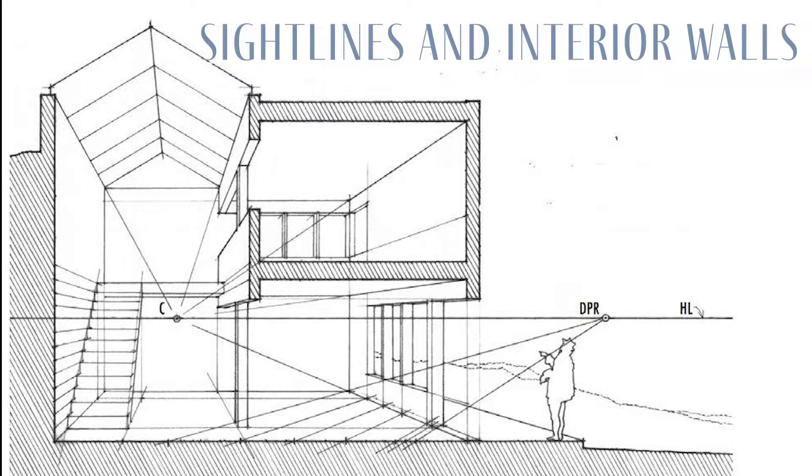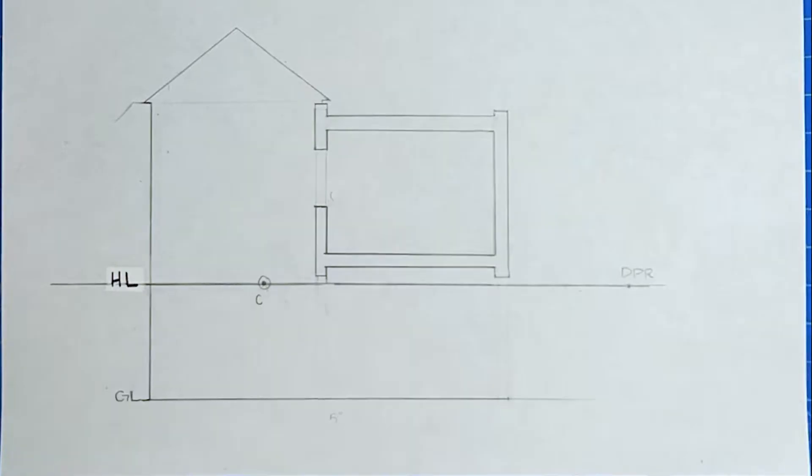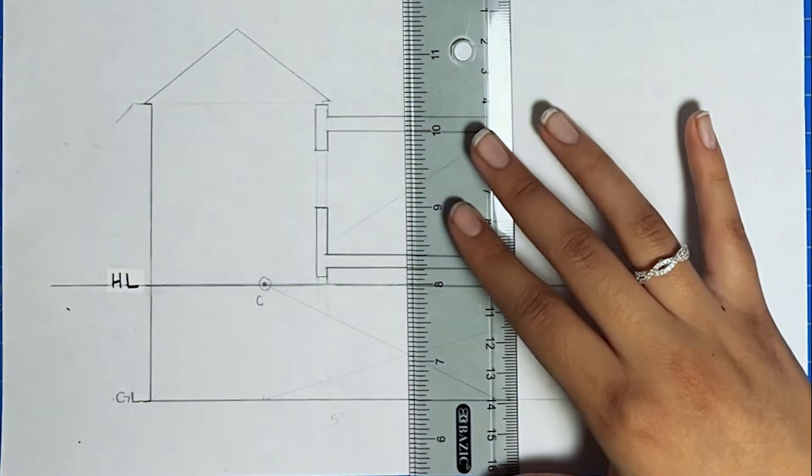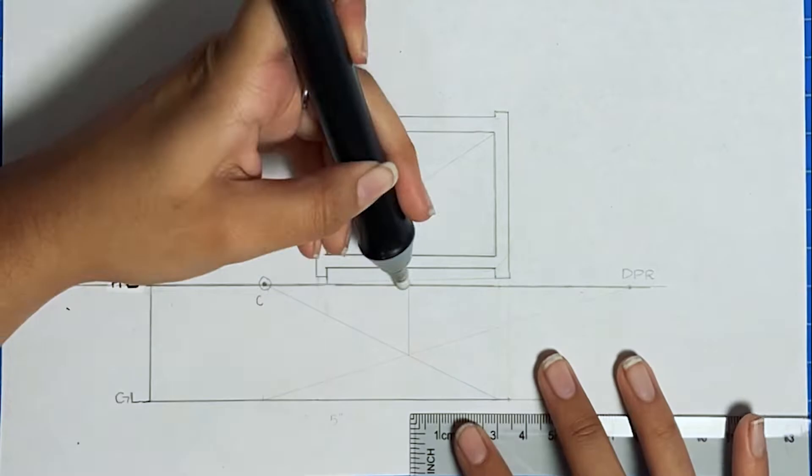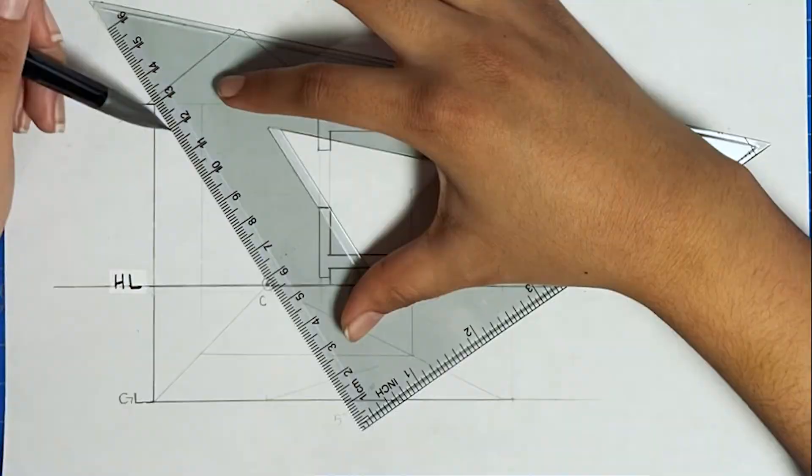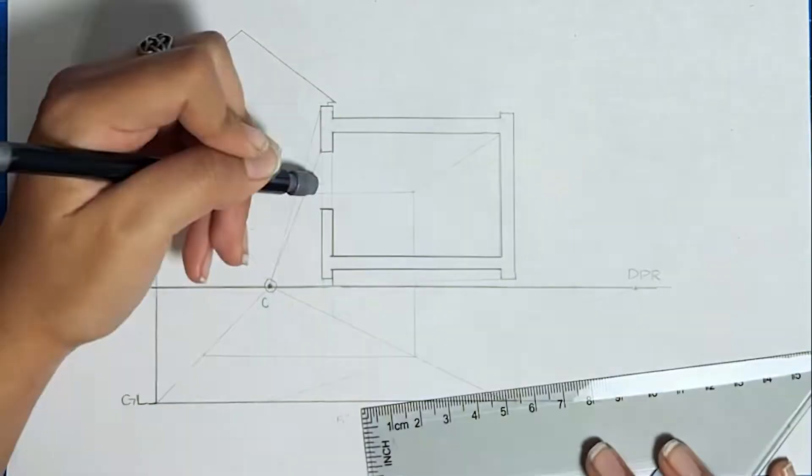Now it's time to create our sight lines and our interior walls using our center point and our diagonal point. Using my diagonal point, I made a line essentially from the diagonal point down to the ground level to create the depth of my drawing.